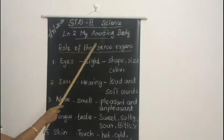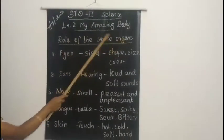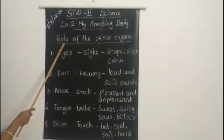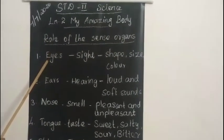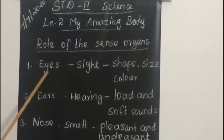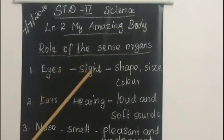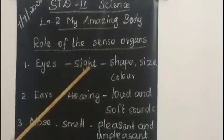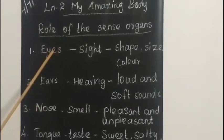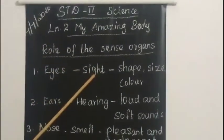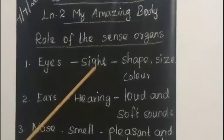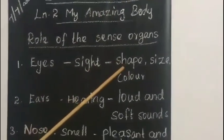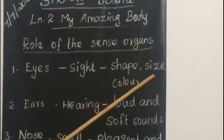Today we study the role of the sense organs. First one: eyes. We can see with our eyes. The role of the eyes is sight — we see shape and color with our eyes.